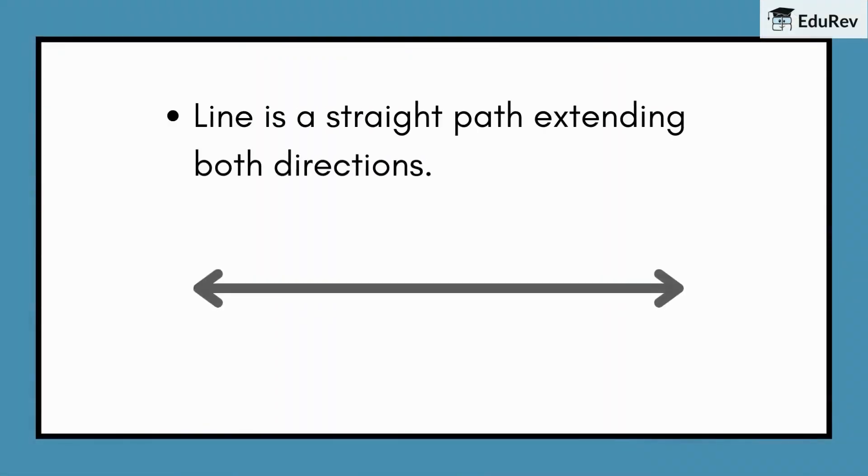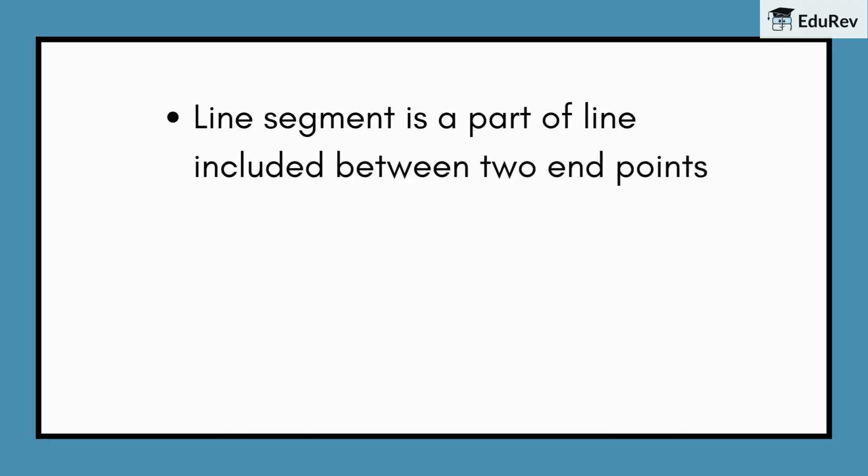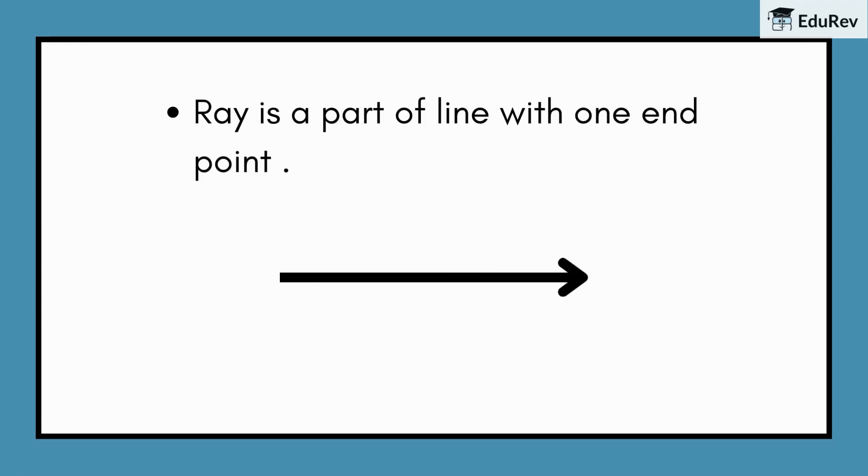Line is a straight path extending in both directions. Line segment is a part of line included between two endpoints. Ray is a part of line with one endpoint.